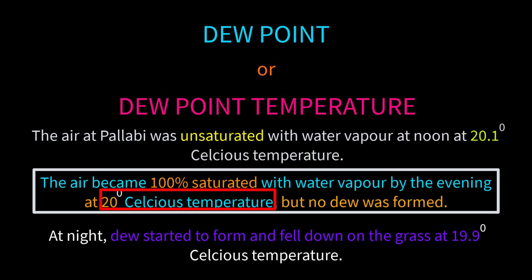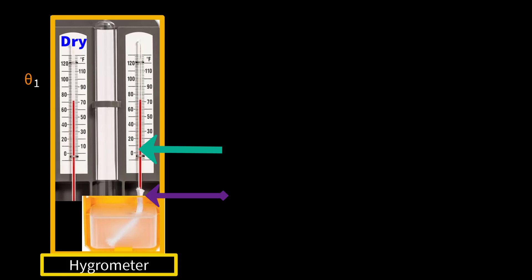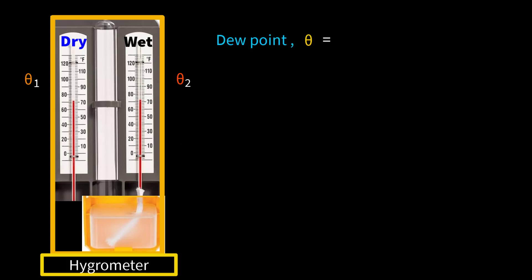Now look at the picture — this is the hygrometer. We can measure the relative humidity of a particular place using it. This instrument consists of two similar mercury thermometers. The first thermometer has no water connection — it is called the dry bulb thermometer, and its temperature reading is expressed by θ₁. The second thermometer is called the wet bulb thermometer, and its temperature reading is expressed by θ₂.